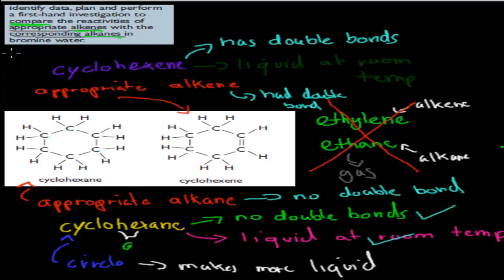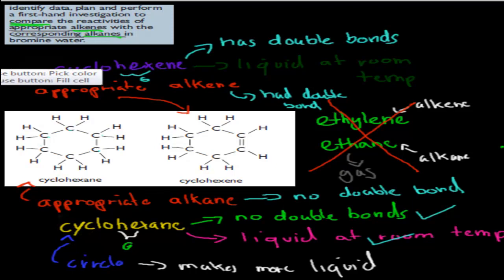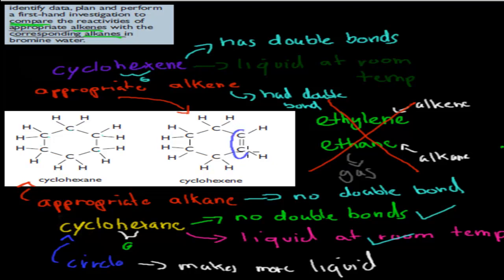On the opposite side, we've got cyclohexene. Cyclo means, again, in a circle. Hex means, again, six. And the 'ene' part refers to it having one double bond. And if you look at the structure, this is cyclohexene — it's very similar to cyclohexane except that it has a double bond right here.